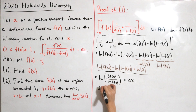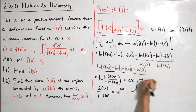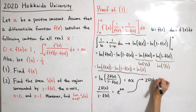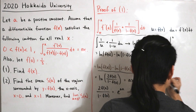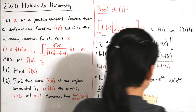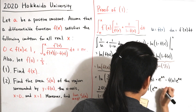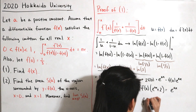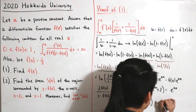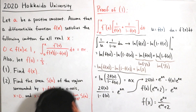Taking e to the power of both sides cancels the logarithm: 2·f(x) / (1 - f(x)) = e^(ax). Multiplying both sides by (1 - f(x)): 2·f(x) = e^(ax) - f(x)·e^(ax). Adding f(x)·e^(ax) to both sides and factoring: f(x)·(e^(ax) + 2) = e^(ax). Dividing, we find f(x) = e^(ax) / (e^(ax) + 2). That completes Part 1.